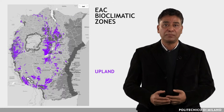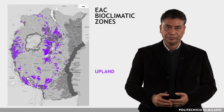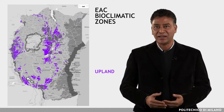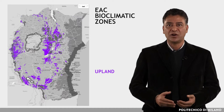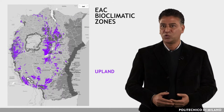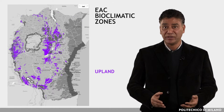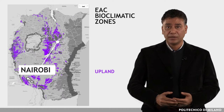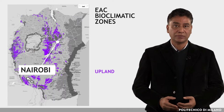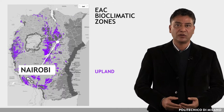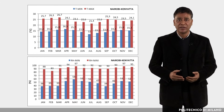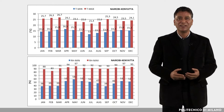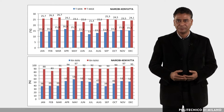The fifth zone is Upland. This zone covers areas at altitudes between about 1500 and 2000 meters. The representative location is Nairobi in Kenya. These are generally cool areas where some heating is welcome on the coolest days of the year.